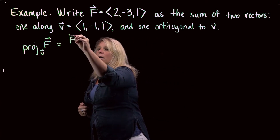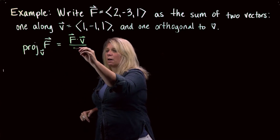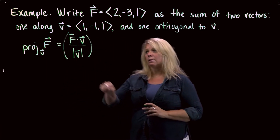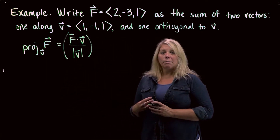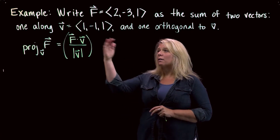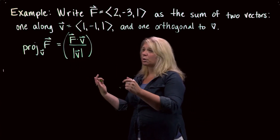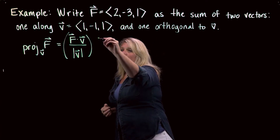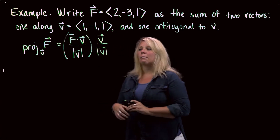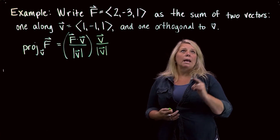The scalar part — the component of F along V — is the dot product F·V divided by the magnitude of V. That's the scalar. And then I'm going to use that scalar to rescale a unit vector that is along V, to get a vector along V with the appropriate magnitude (which could possibly be negative).